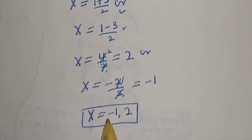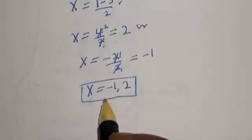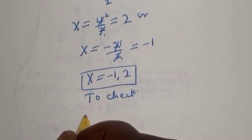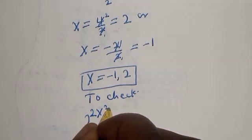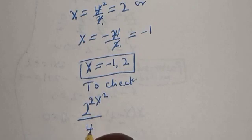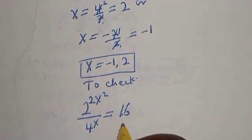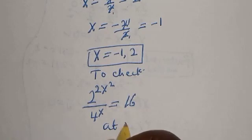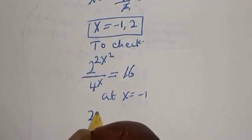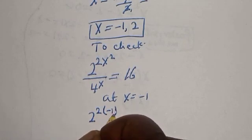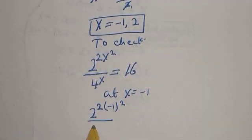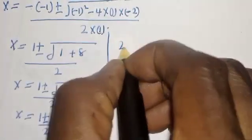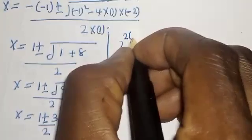Both methods give the same answer. Let's check by substituting back into the original equation: 2 raised to power 2s squared, divided by 4 raised to power s, must equal 16. At s equals minus 1: 2 raised to power (2 times (minus 1) squared), divided by 4 raised to power minus 1, must equal 16. Since (minus 1) squared is 1, this is 2 raised to power 2, divided by 4 raised to power minus 1.